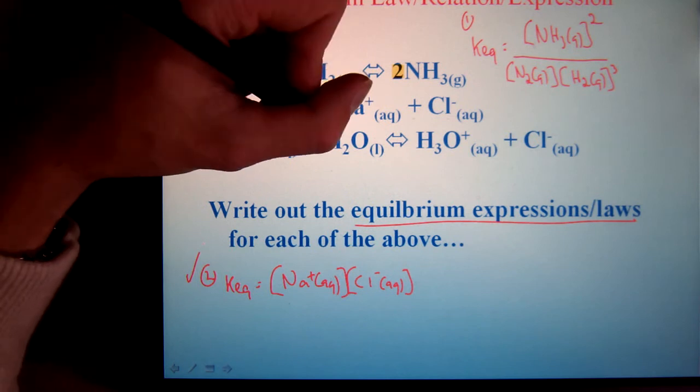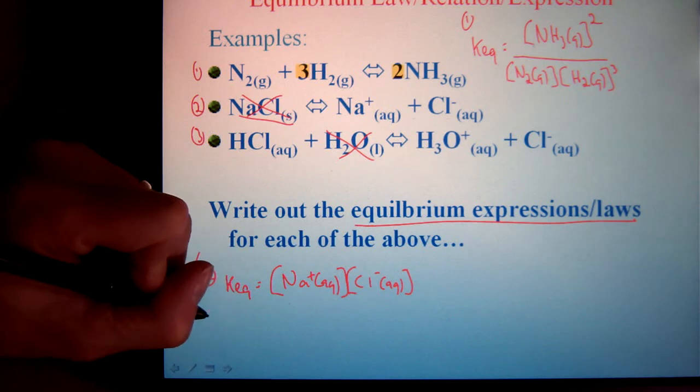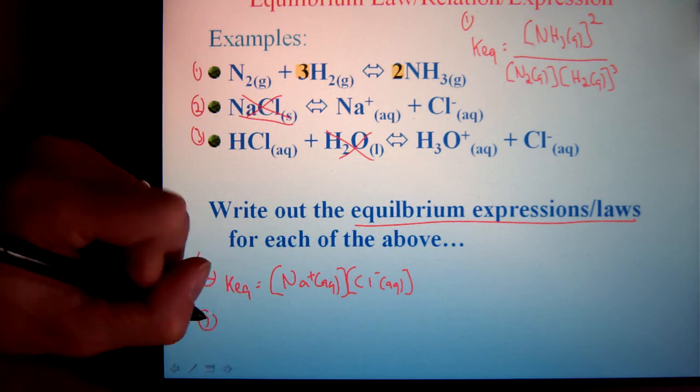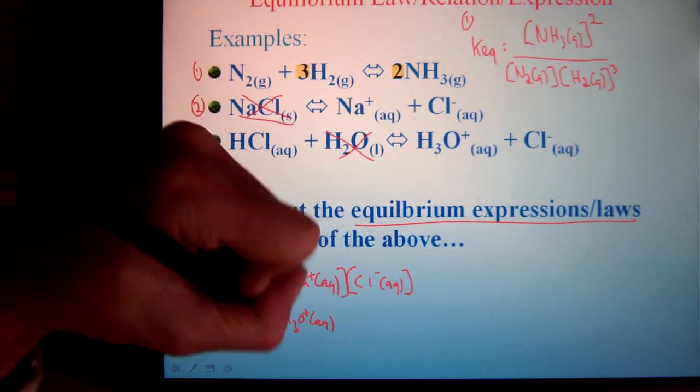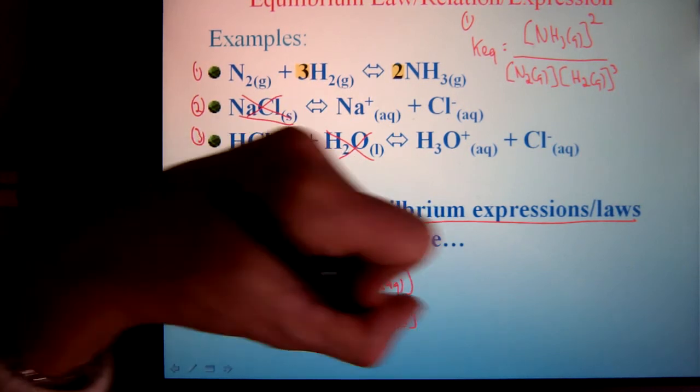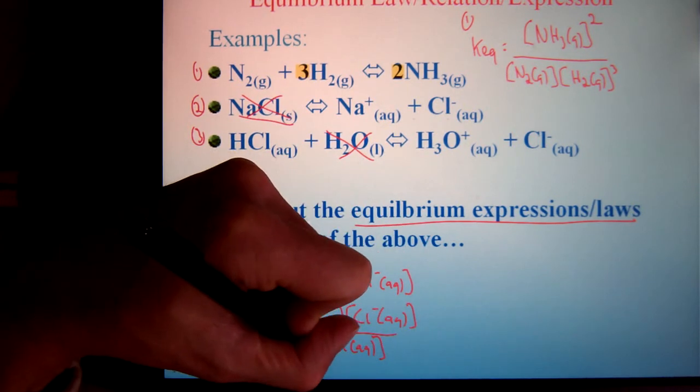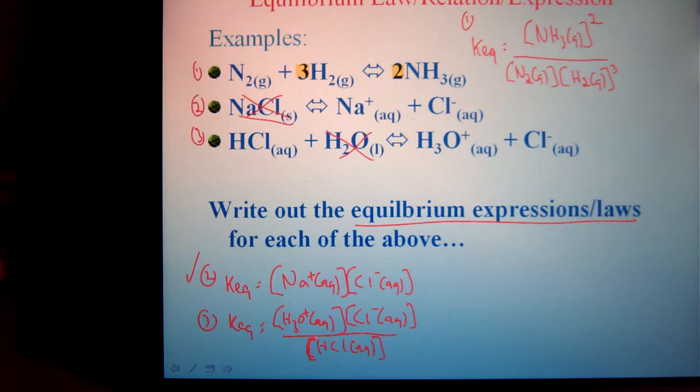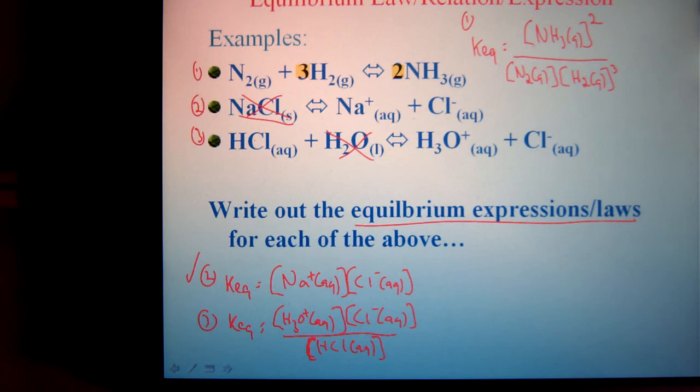And just like that, for example number three, the pure liquid, the water, is actually the solvent of the system since it's aqueous. So it doesn't really have a specific concentration. It would be a constant value, but we don't really care. So just ignore it. So example three, and you see this one a lot in the next unit dealing with acids and bases. Concentration of the hydronium ion times chloride over the original acid. You won't really see it so much for hydrochloric acid, which is a strong acid, but it serves our illustration just fine.